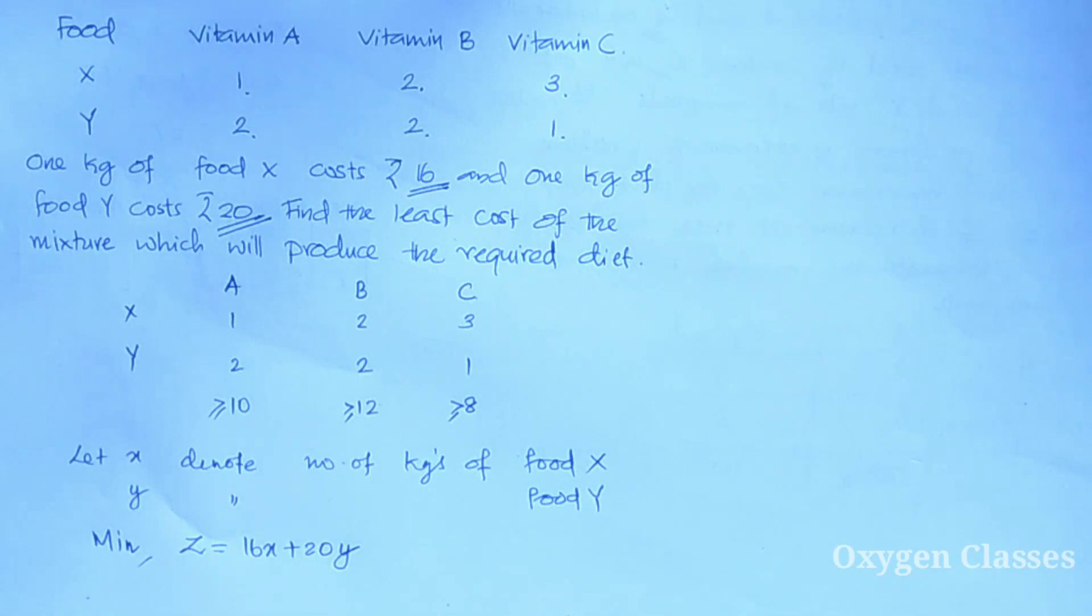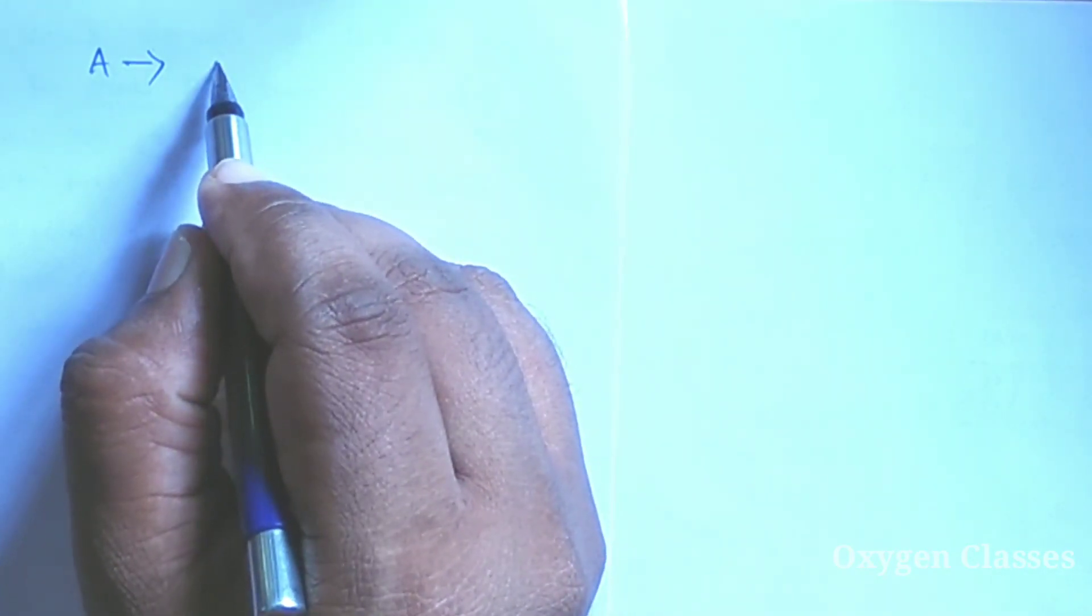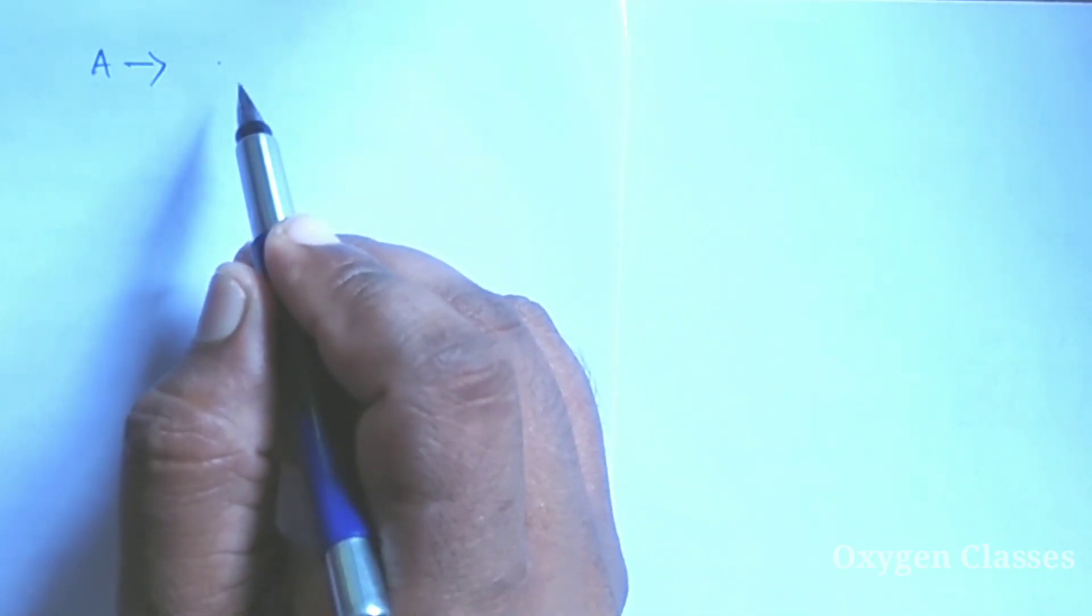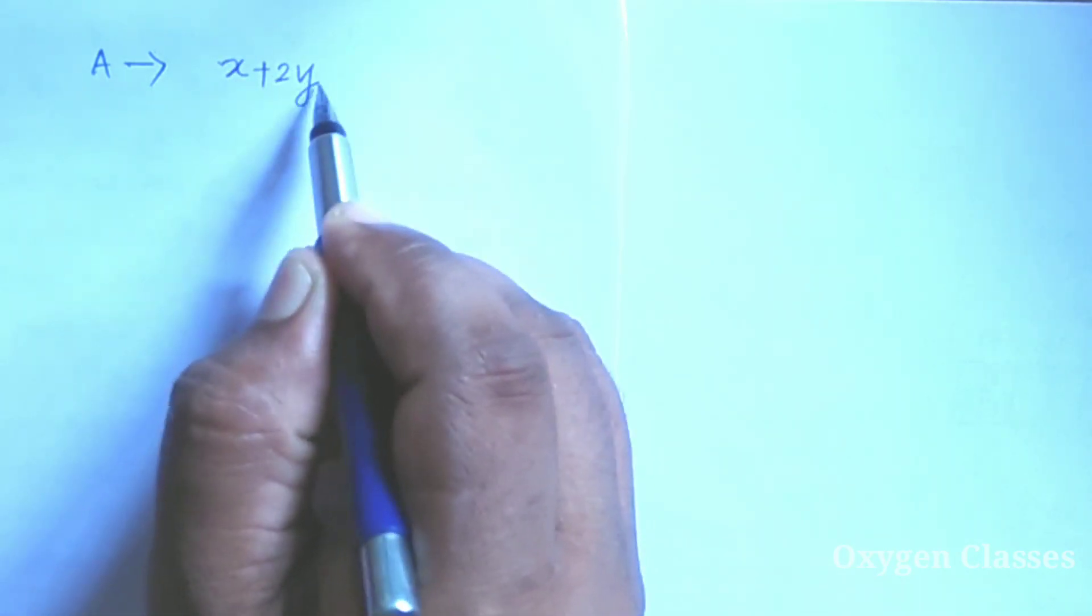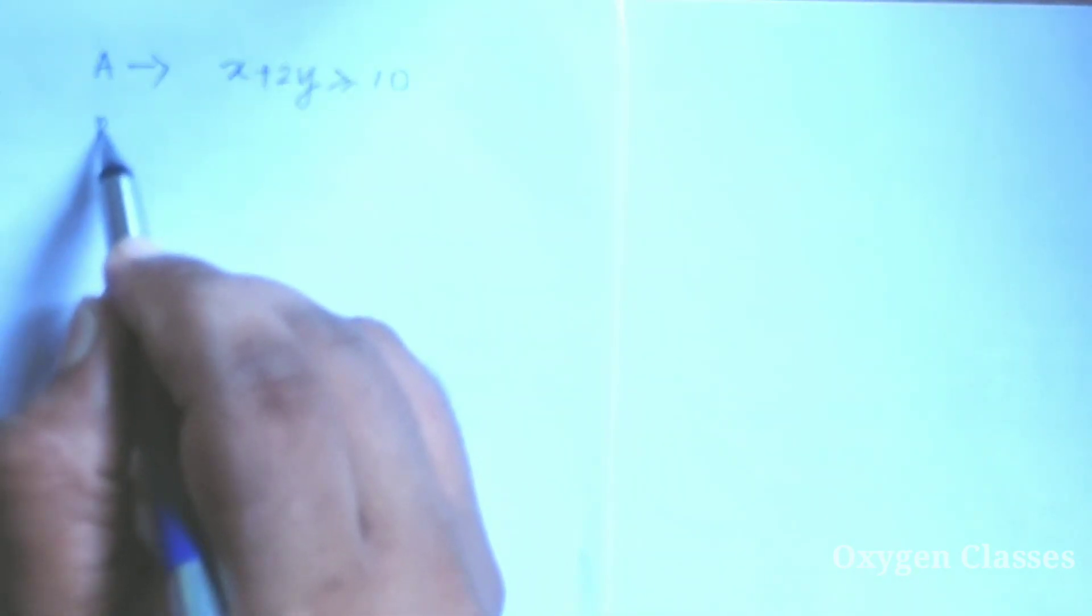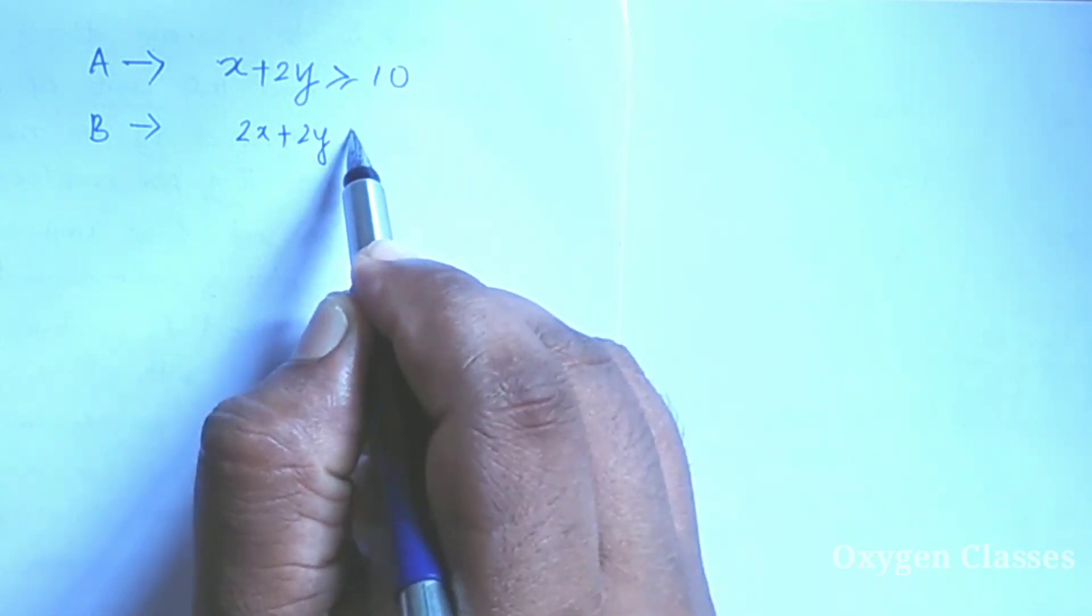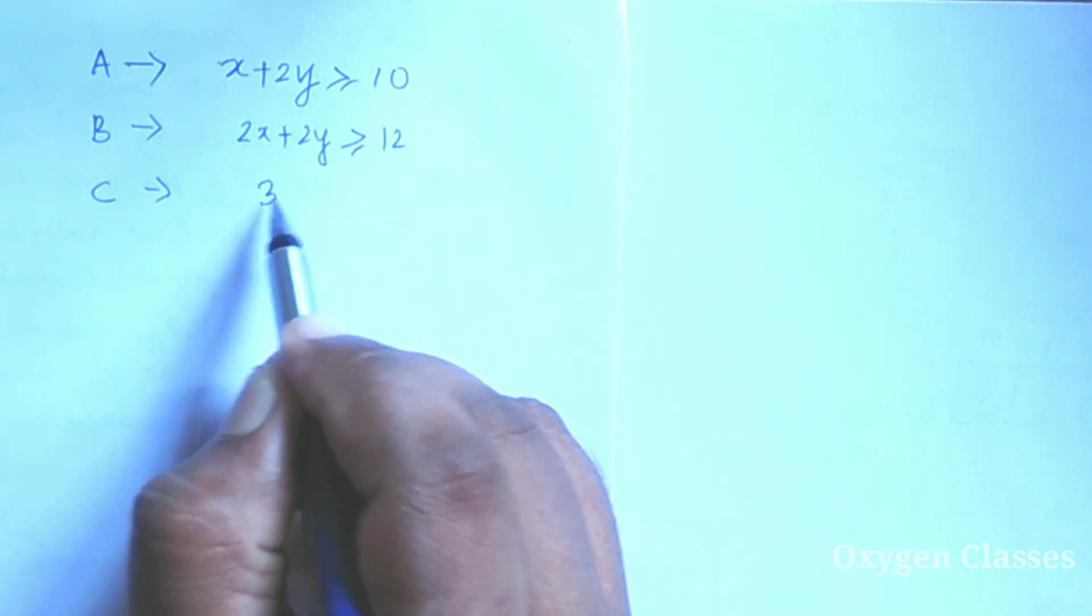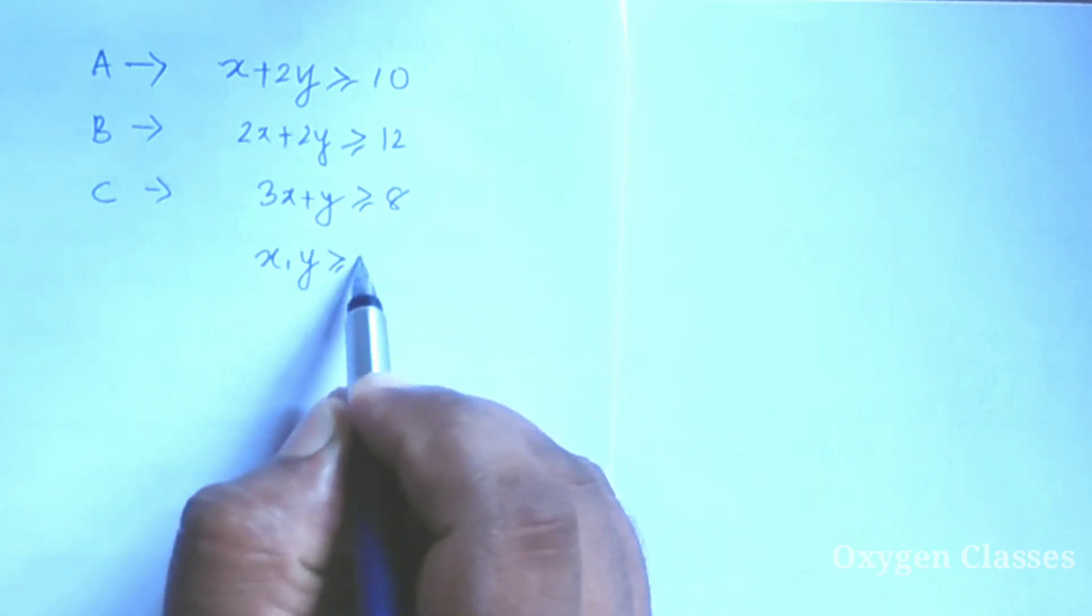We need to minimize this objective function, minimize Z equals 16X plus 20Y. This is the cost of food X and Y.